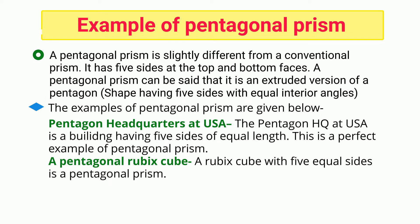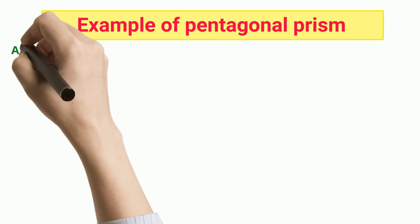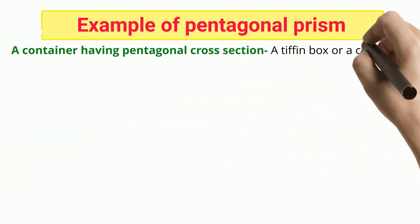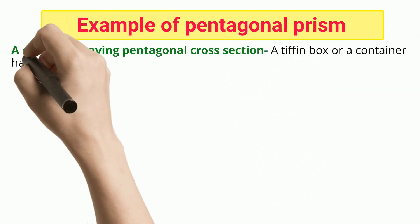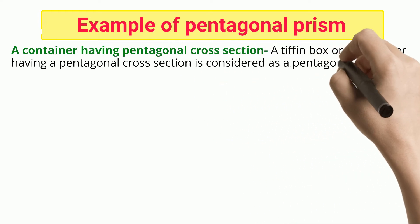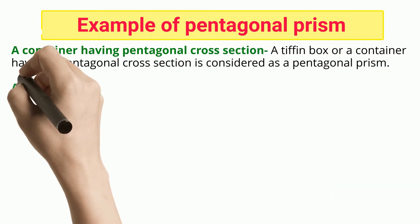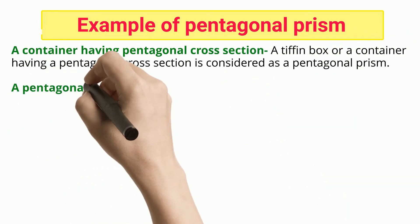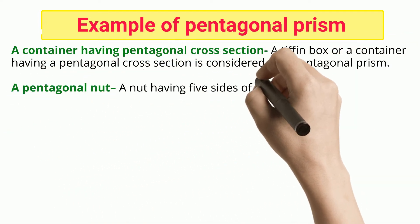A pentagonal Rubik's Cube with five equal sides is a pentagonal prism. A container having a pentagonal cross-section, such as a tiffin box, is also considered as a pentagonal prism.